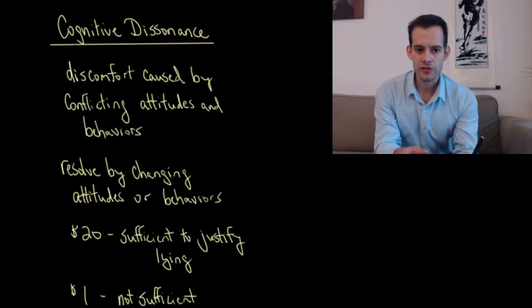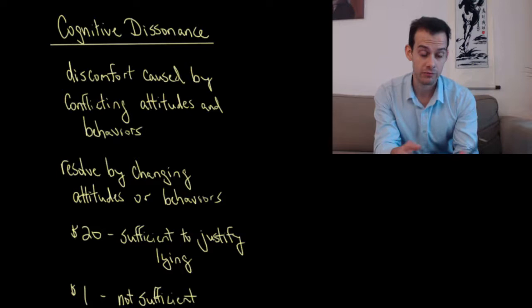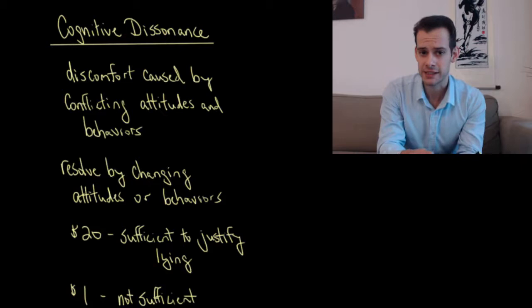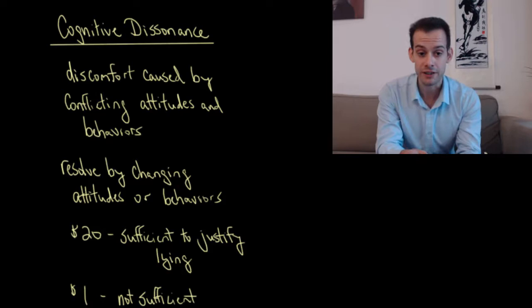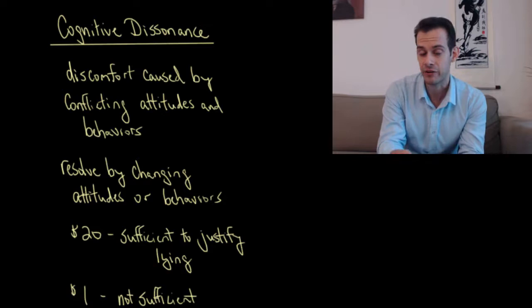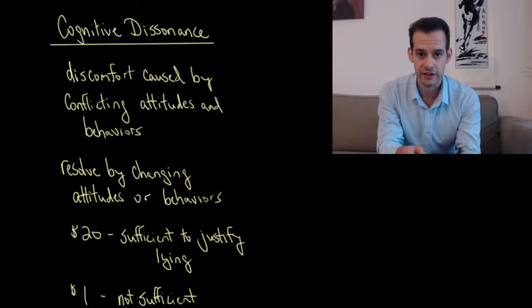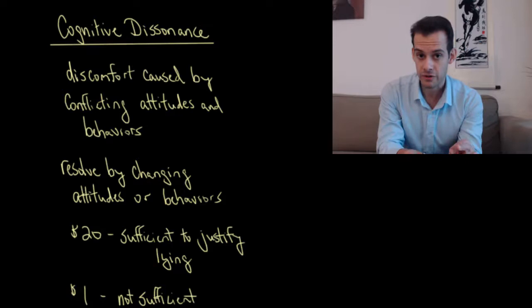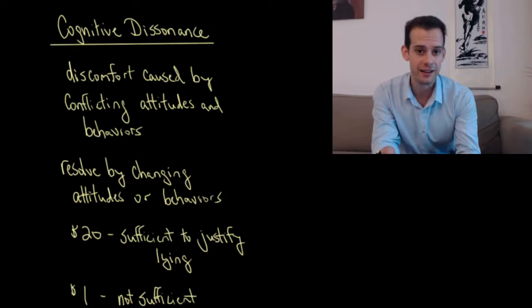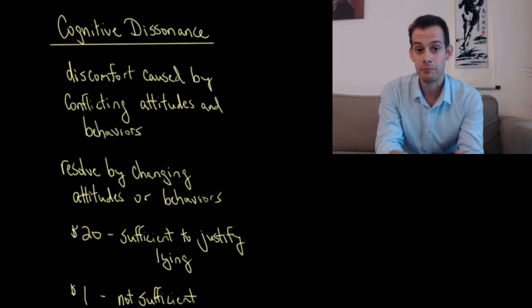The idea is that there's a conflict between attitudes and behaviors that causes discomfort — this dissonance — and this discomfort needs to be resolved. Festinger and Carlsmith proposed we resolve it either by changing our attitudes, adding new cognitions, or by changing our behaviors. In this case the participants can't change their behaviors since they've already lied, so the $20 group justifies it by saying: anyone would lie for $20 — that's sufficient, the cognitive dissonance is relieved. But $1 is not sufficient justification.